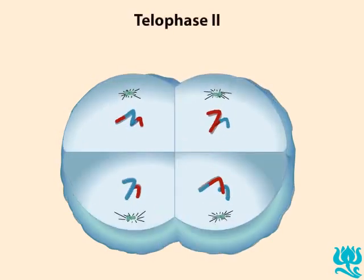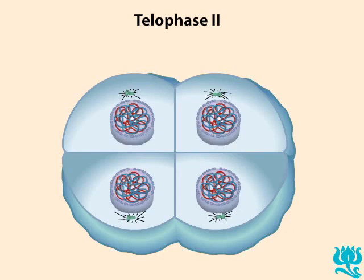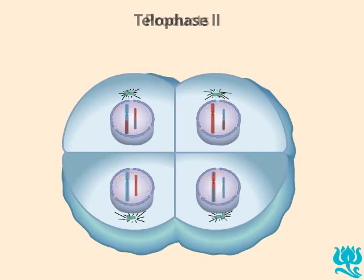During telophase 2, chromosomes again decondense and nuclear membranes reform. Depending on the species, cytokinesis may occur.